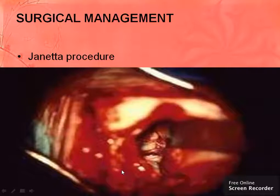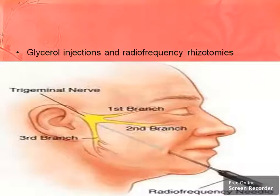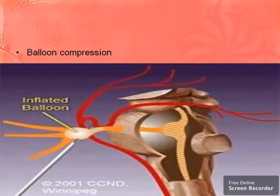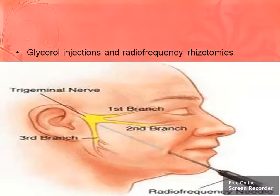Balloon compression is another treatment: a balloon is inserted into the compressed nerve and then inflated so that the nerve is no longer compressed and its function is restored to normal.